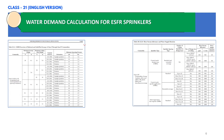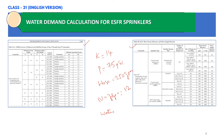Let us note down all the values we have determined: K factor is 14, minimum operating pressure for one sprinkler is 75 PSI, hose stream allowance is 250 GPM, number of sprinklers to be considered is 12 as per NFPA 13, and the water supply duration required is 60 minutes. In the next slide we are going to calculate the water demand requirements.